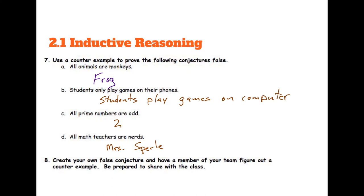So for a prime number here, two. This is actually a true conjecture for every single number out there, except for two. All prime numbers are odd except for two. But because I have at least one counterexample, then that conjecture is false.